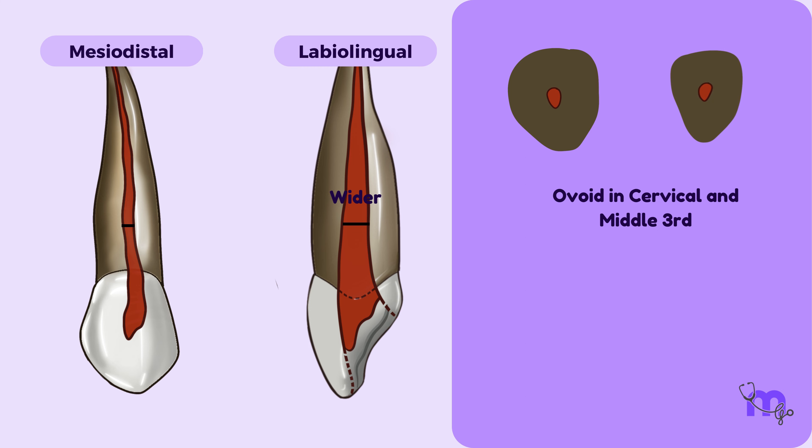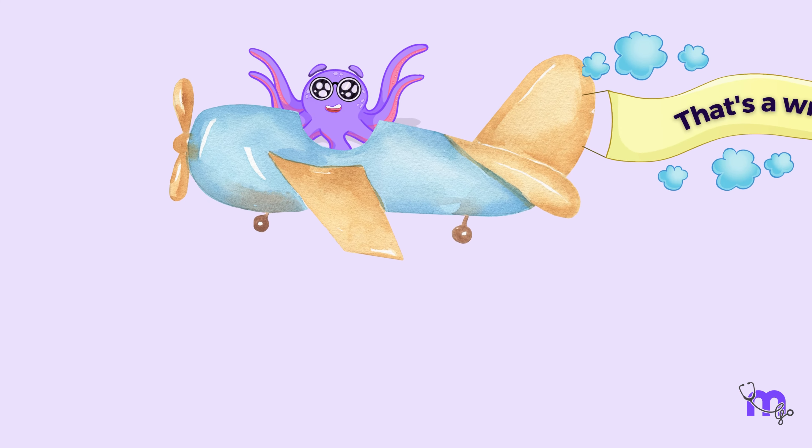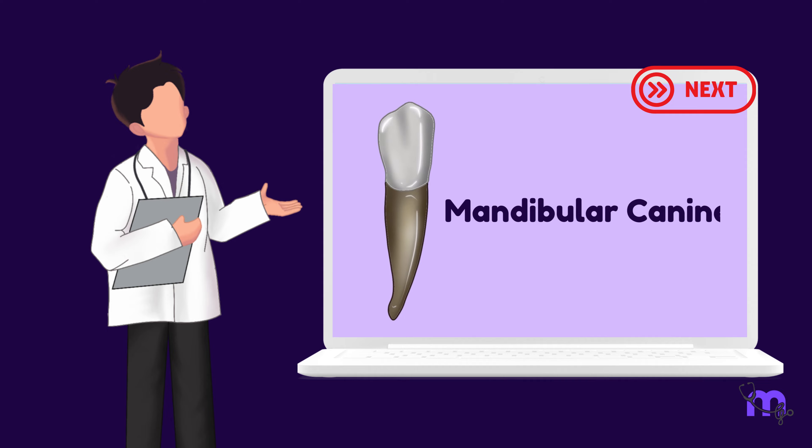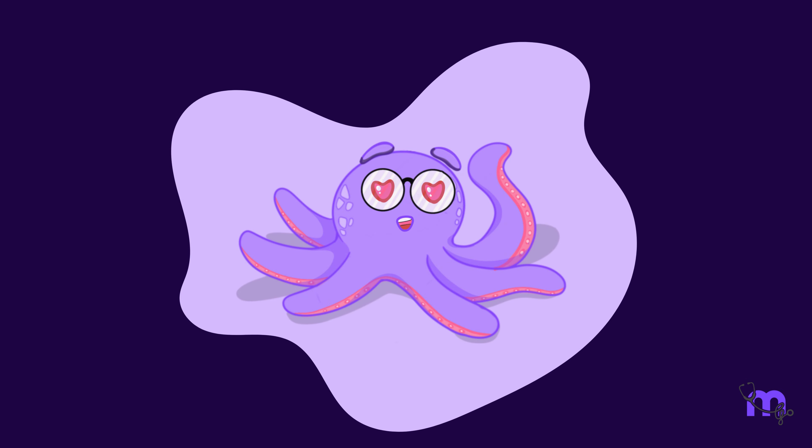Having learned about the crown morphology, let's now look at the root morphology. The maxillary canine typically possesses the longest root among teeth, with an average length of 17 mm, though there may be an exception in the case of the mandibular canine. Similar to the crown, the root is wider labio-lingually than mesio-distally and exhibits a conical shape with a bluntly pointed apex, occasionally featuring a sharp curve usually directed distally. The labial surface is smooth and convex. The lingual portion is narrower than the labial aspect, providing a clear view of most mesial and distal surfaces. The mesial surface appears broader with shallow developmental depressions, while the distal surface exhibits more pronounced depressions. These developmental depressions contribute to root stability in the alveoli, preventing rotation and displacement.